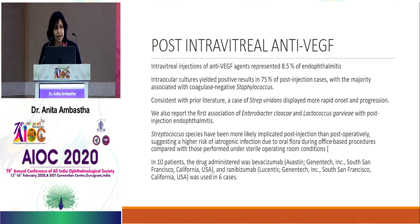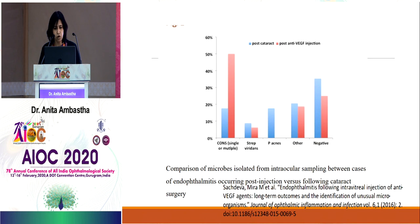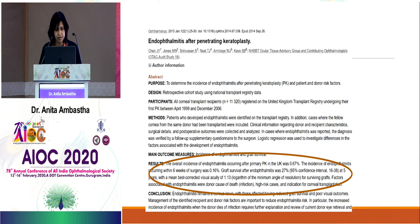Post-intravitreal anti-VEGF injection endophthalmitis accounts for approximately 8.4% of all post-op endophthalmitis cases, with positive intraocular cultures in 75% of cases, majority being coagulase-negative staph. In comparison to post-cataract surgery, gram-negative organisms were more common post-cataract, while staphylococcus was more common post-anti-VEGF injection. In post-PK endophthalmitis (UK incidence 0.67%), gram-positive organisms predominated, and in 60% of cases the donor button was the likely infection source.